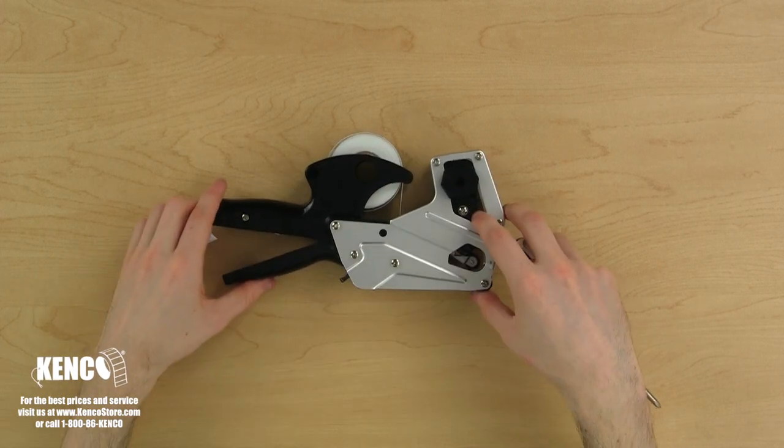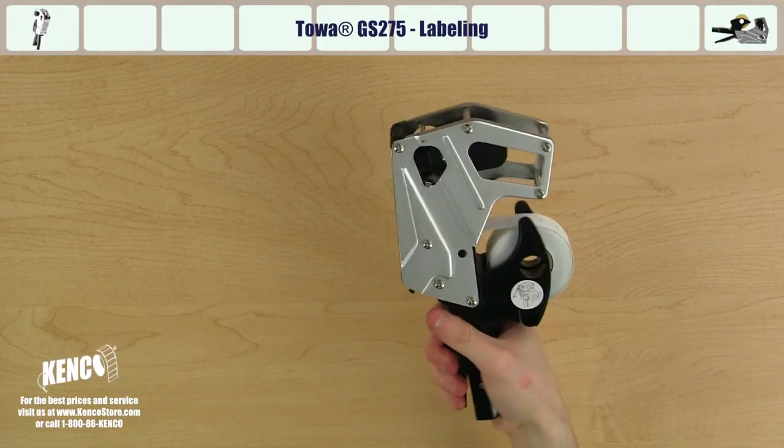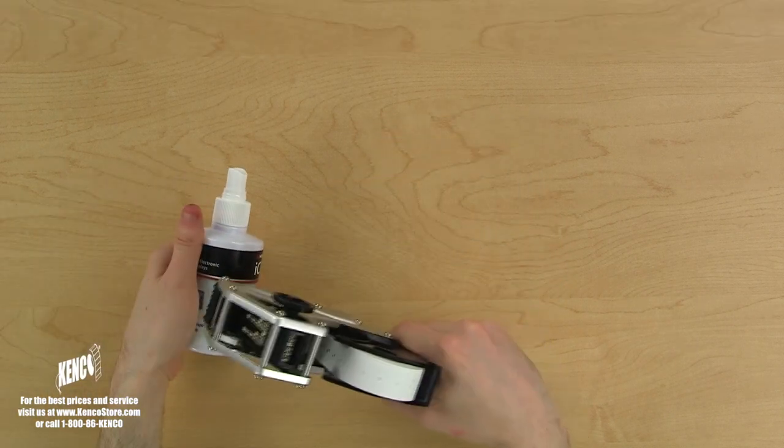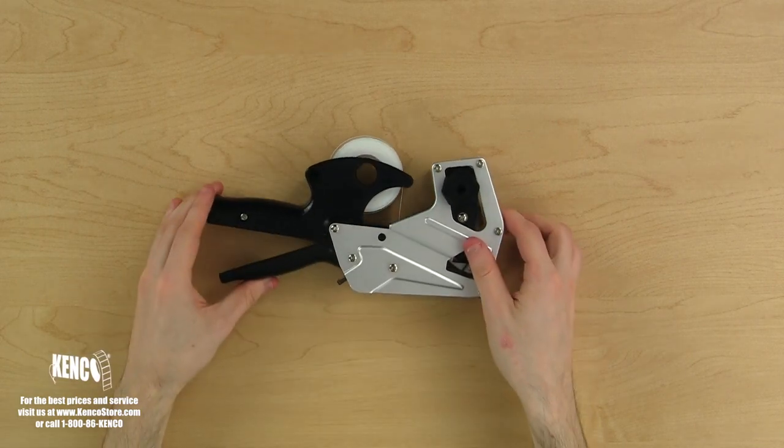Now that it's printing perfectly, we are ready to begin labeling. To label an item, simply pick up the gun, squeeze and release the trigger once, hold the price gun directly over the product, then just roll the label on your product and you're all done.